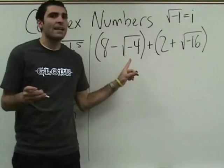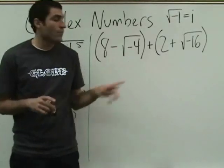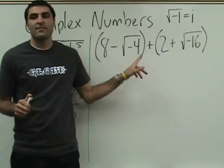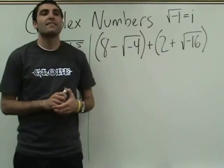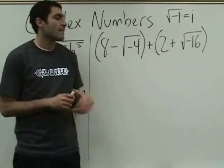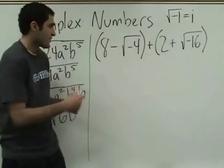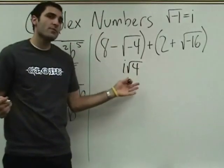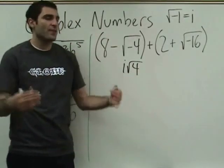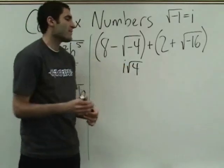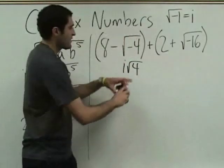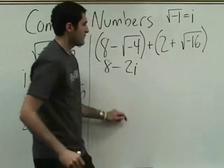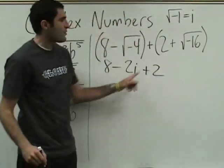This could be i square root of 4. And then 8 minus 2. Who can venture the next guess? It's 2i. Yes, it's 2i. Any questions? We can do this more slowly. i square root of 4 — and square root of 4 is 2, so this is 2i. It's okay for you guys to make that jump. So I'm going to write 2i here. 8 minus 2i plus 2.